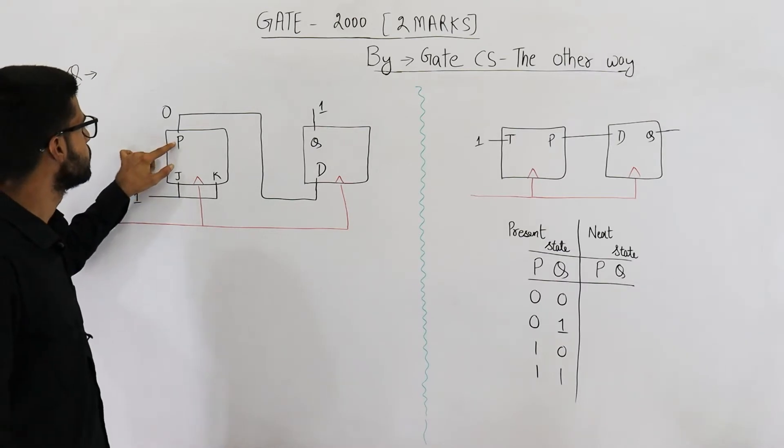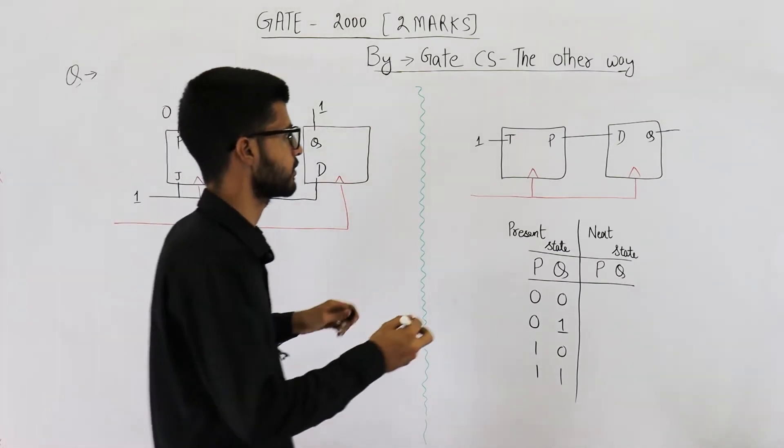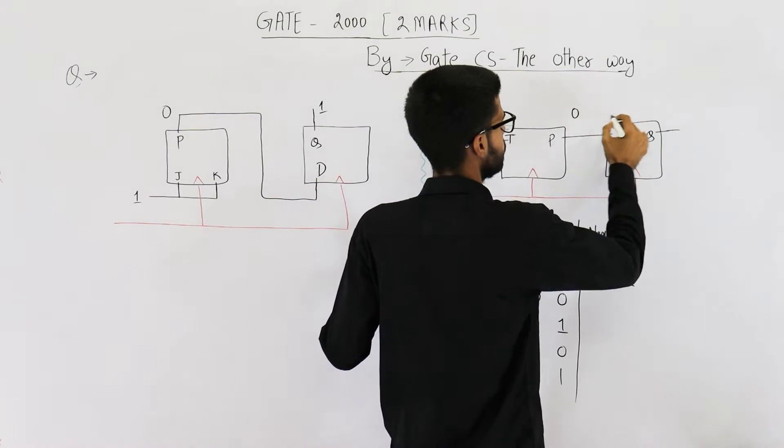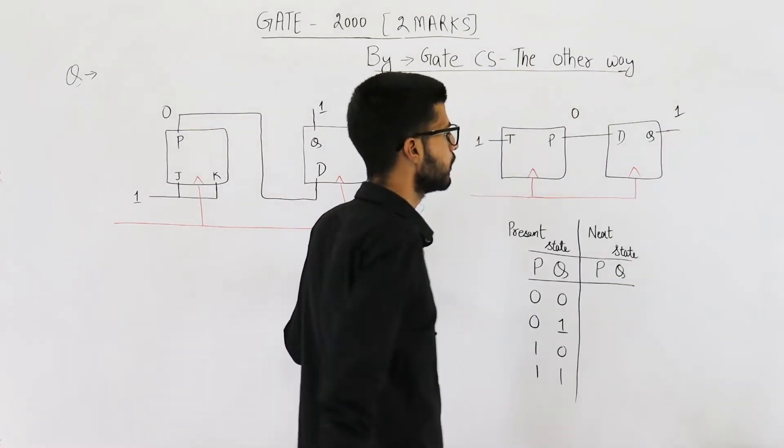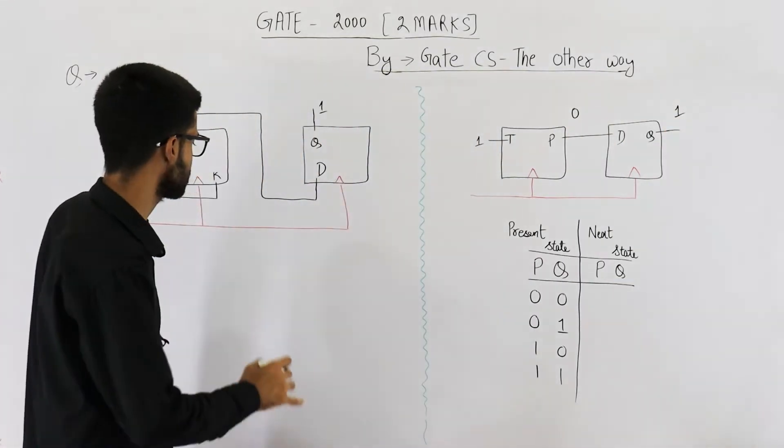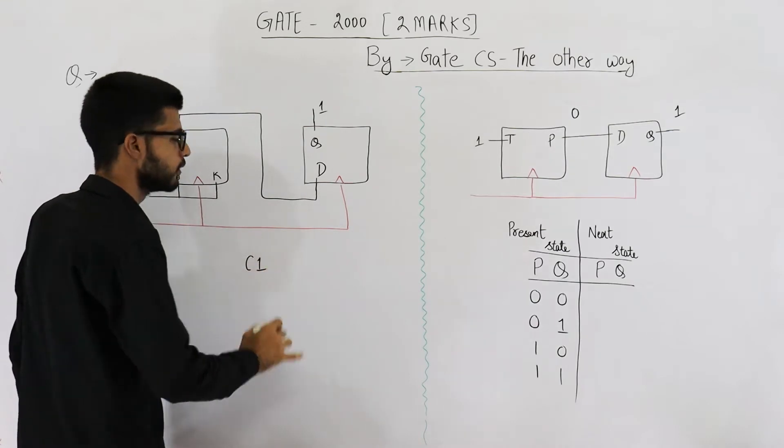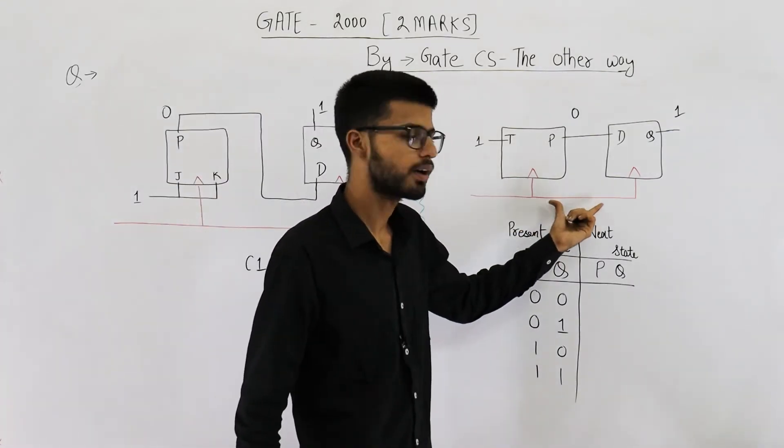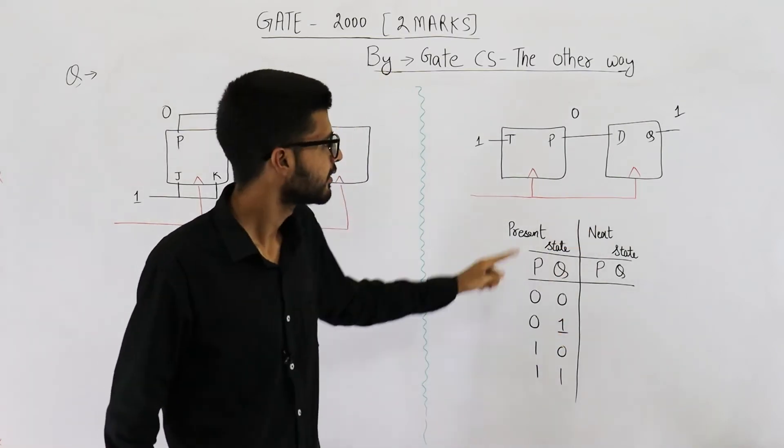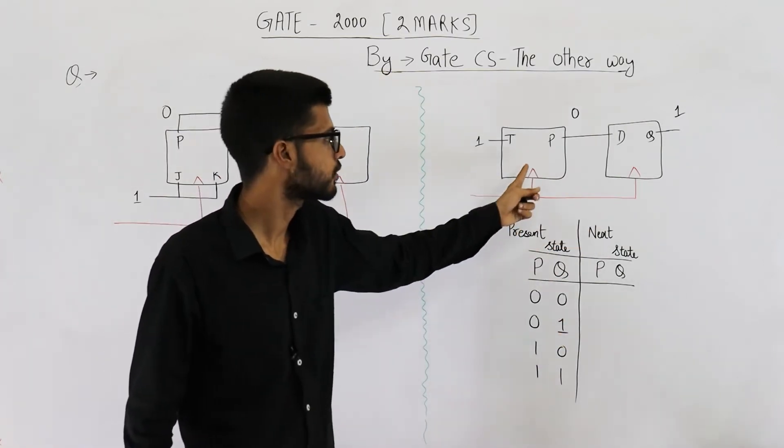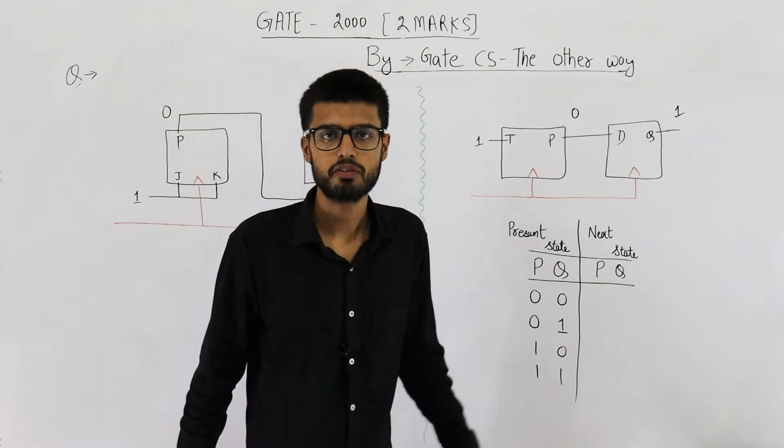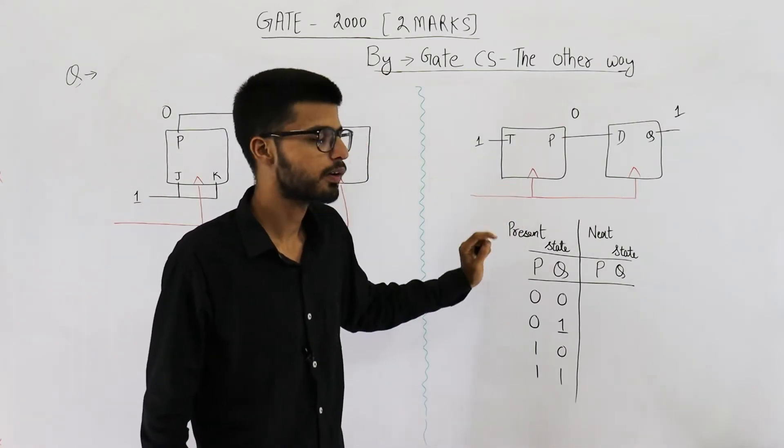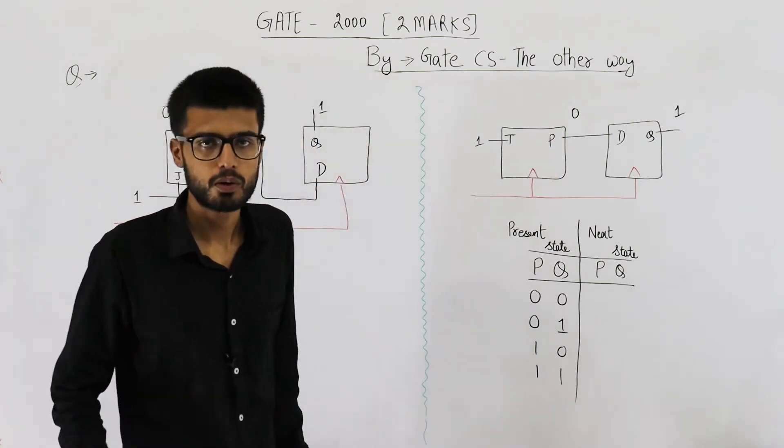Also they have given P is zero Q is one. So let's write zero and one here. Now let's see what will happen when first clock signal is issued. On seeing this clock signal, first thing this one is a synchronous counter because clock is common to both of them. Whenever you give a clock signal both of them will see the clock.